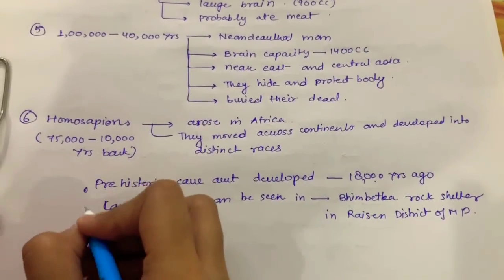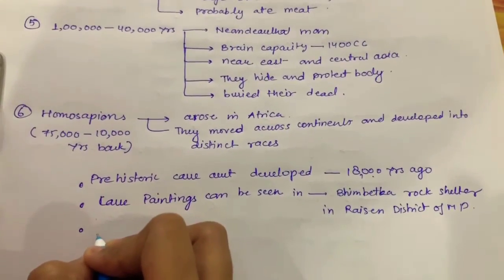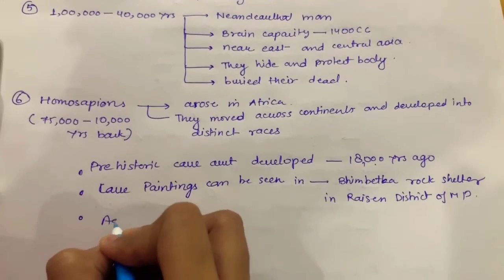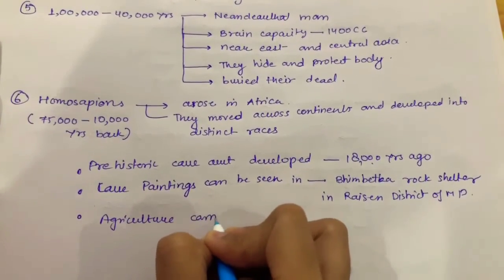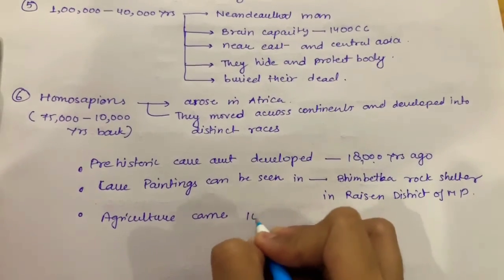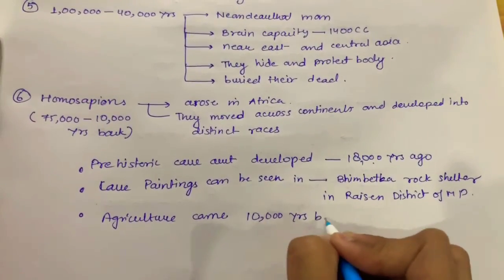Last point you have to note down is that agriculture came 10,000 years back.